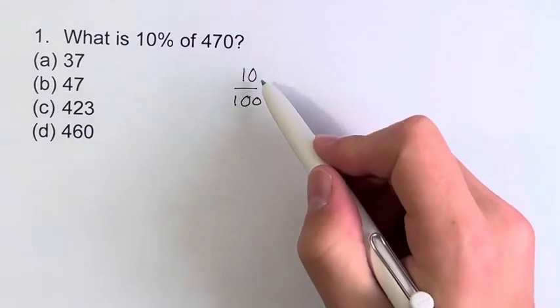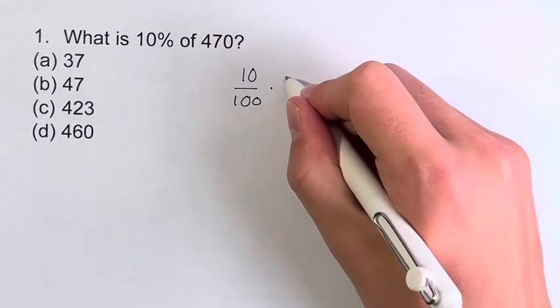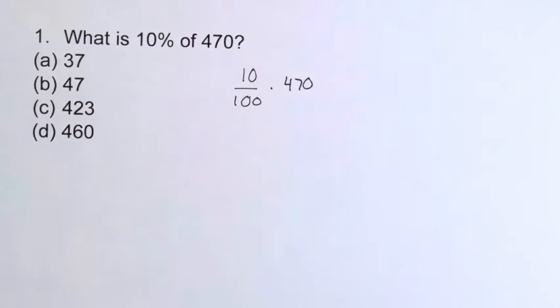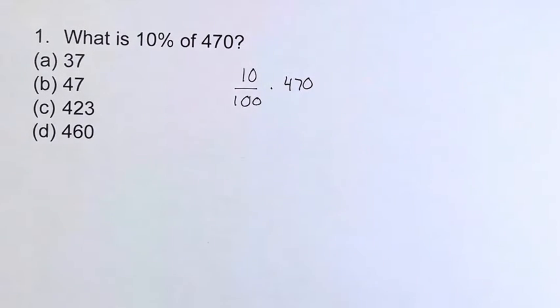And we're taking this fraction of 470. So we're multiplying this by 470. The way we can do this is you multiply the things on top and you divide it by what's on the bottom.